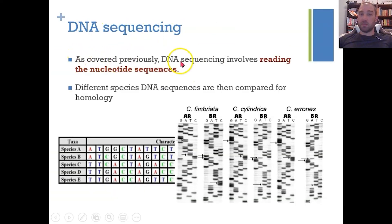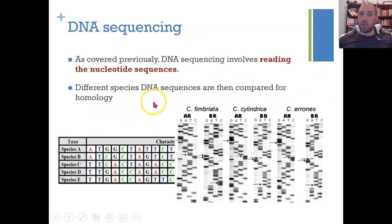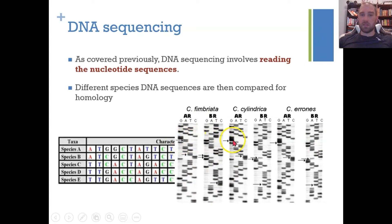DNA sequencing involves reading the specific nucleotide sequences present in the species being studied. Different species have different DNA sequences, and we can compare them — the more differences, the more time has passed since those two species shared a recent common ancestor. Looking at three species, we can see differences in the G, A, T, and C letters at specific nucleotide positions.